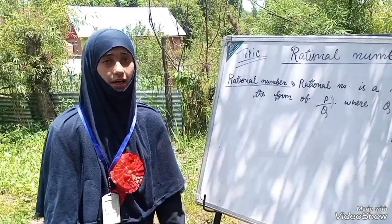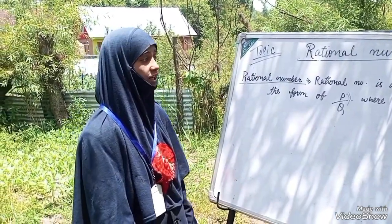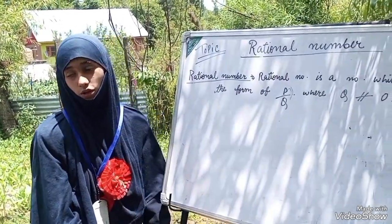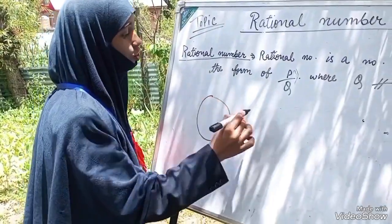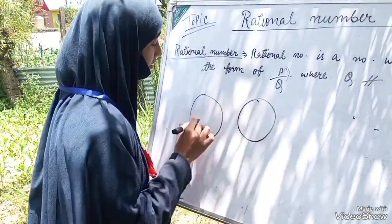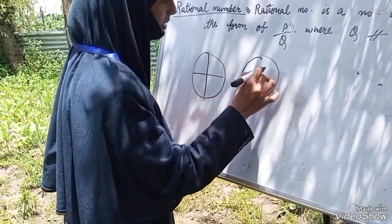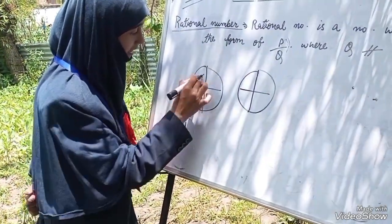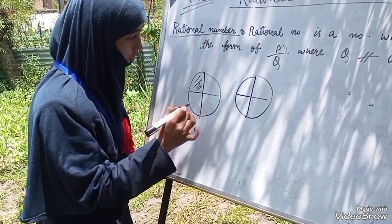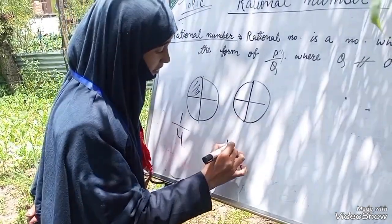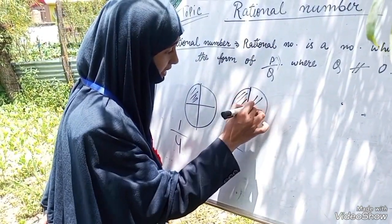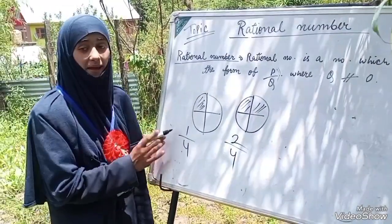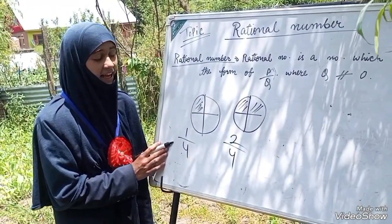Now I will show you an example of why the denominator cannot be zero. I have made two rotis here, each cut into four pieces. Tanzila ate one piece from the first roti — that is one by four. Tanzila ate two pieces from the second roti — that is two by four.